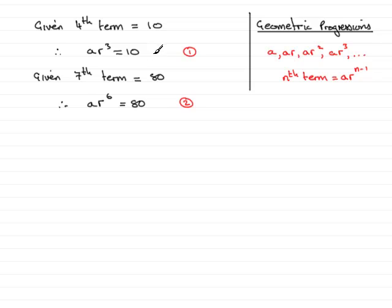Now when you have simultaneous equations like this, one of the most efficient ways of solving them is to simply take equation number 2, the one with the highest power in R to the power 6, and divide it by equation 1. Let me show you.